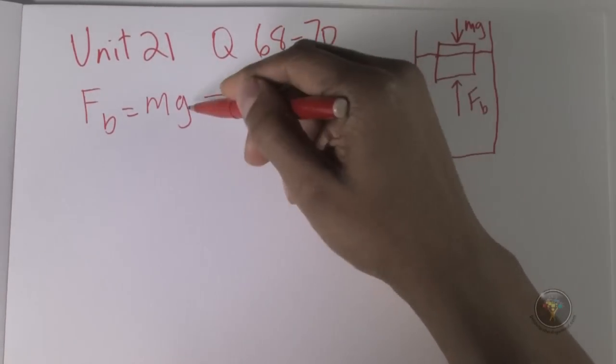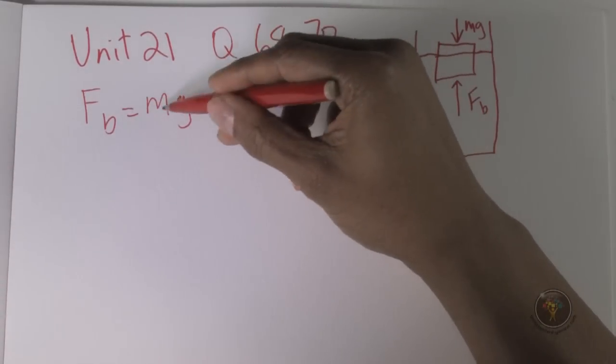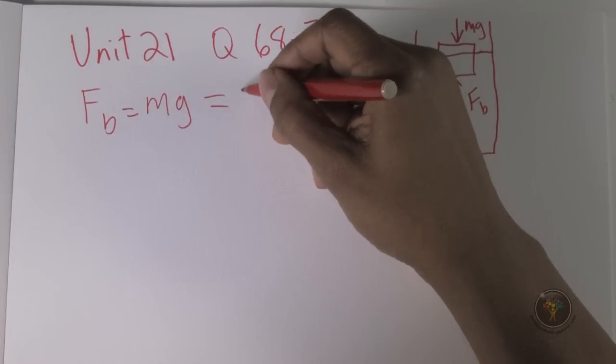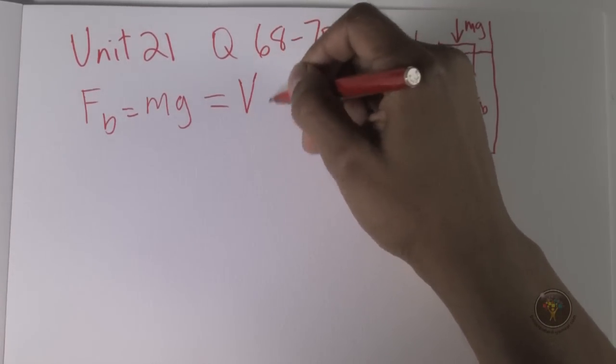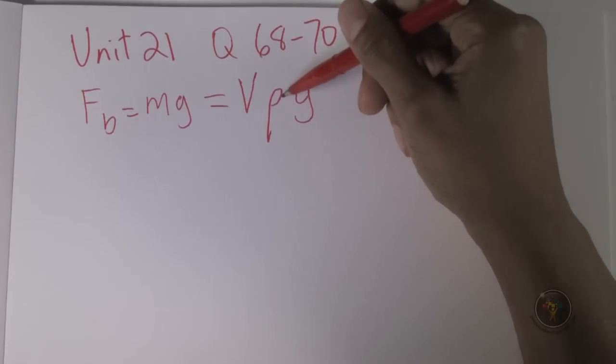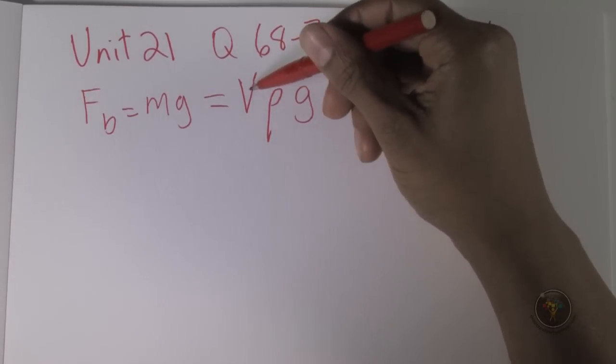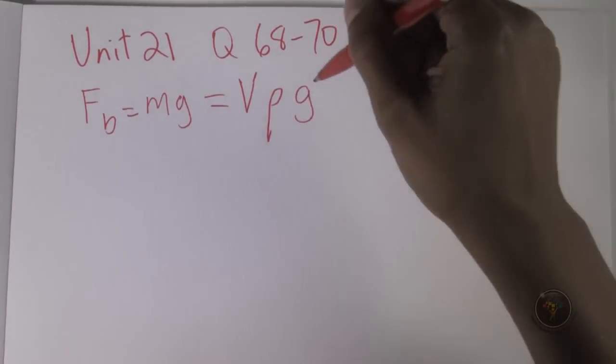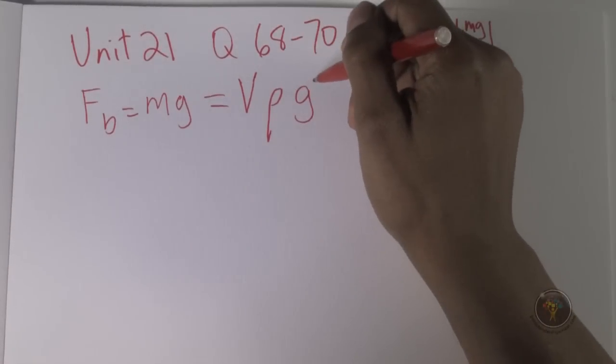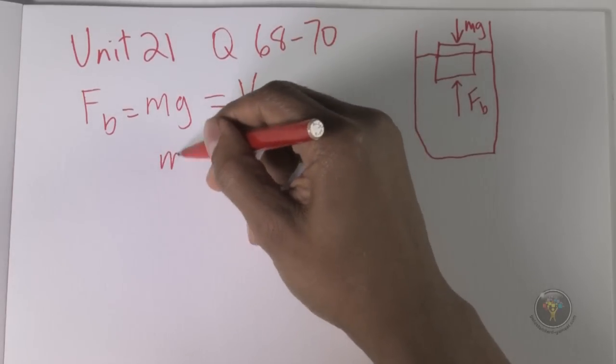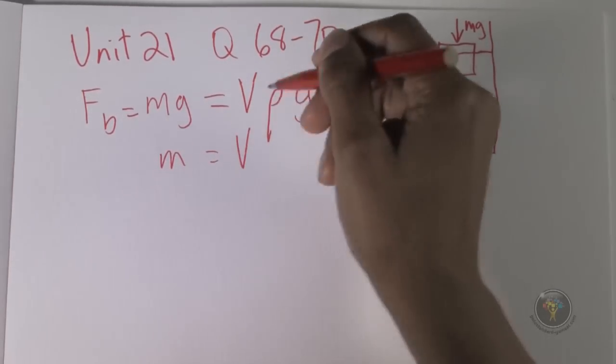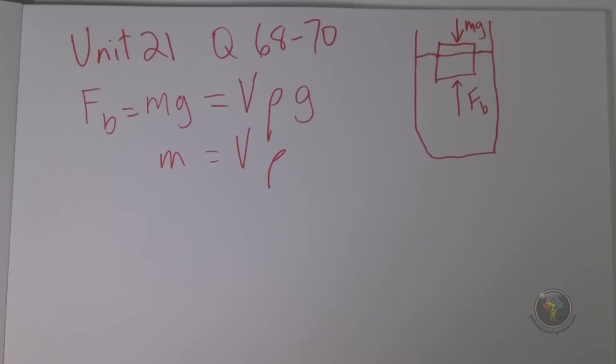We have gravity on this side, but instead of mass we can put volume times density. Density, this is the Greek letter rho, is mass over volume. So mass over volume times volume is just equal to mass. This is just equal to mg, but by rewriting it we get to do some more interesting things.